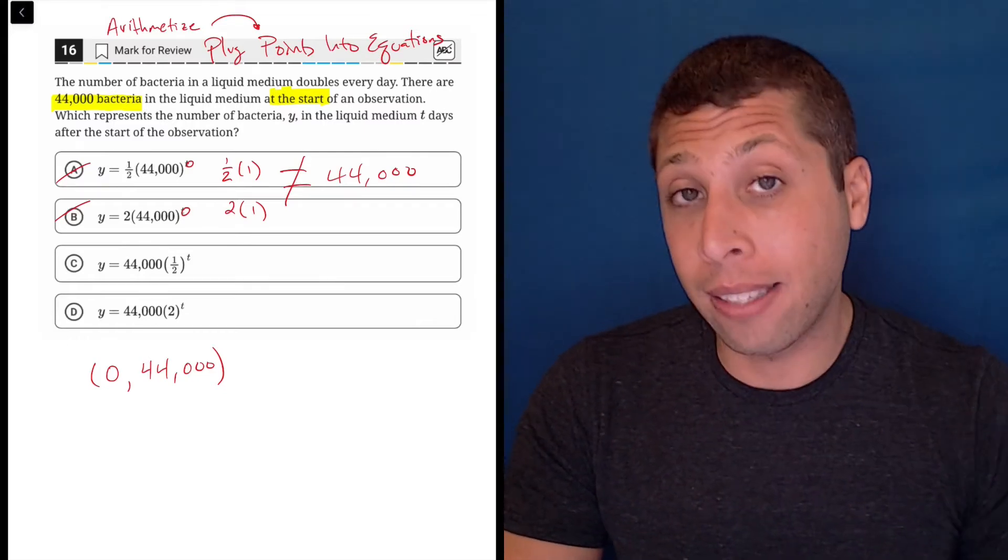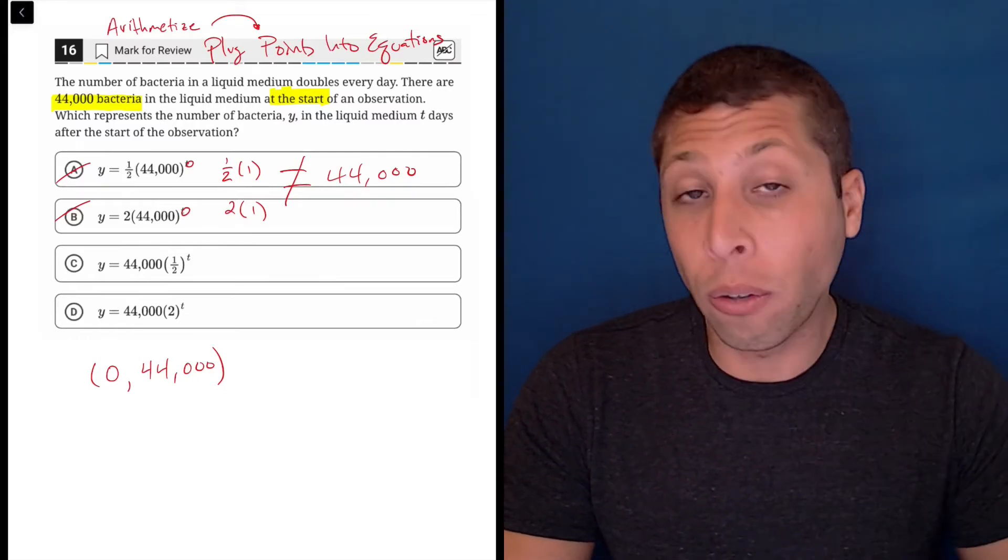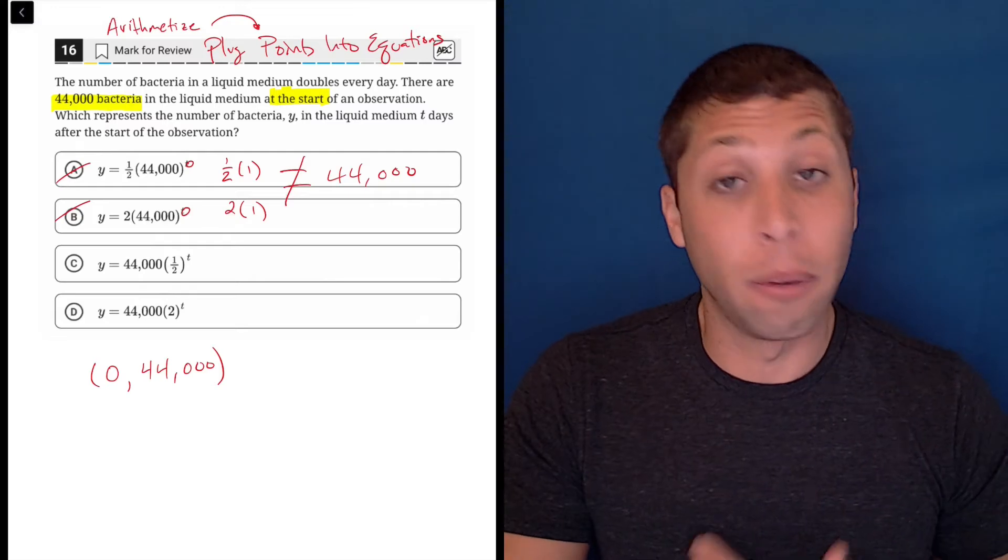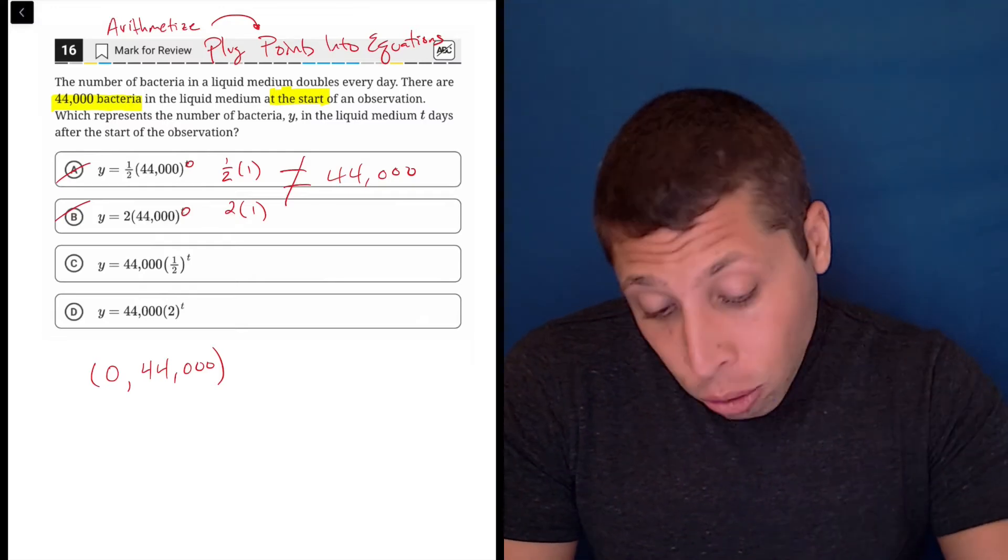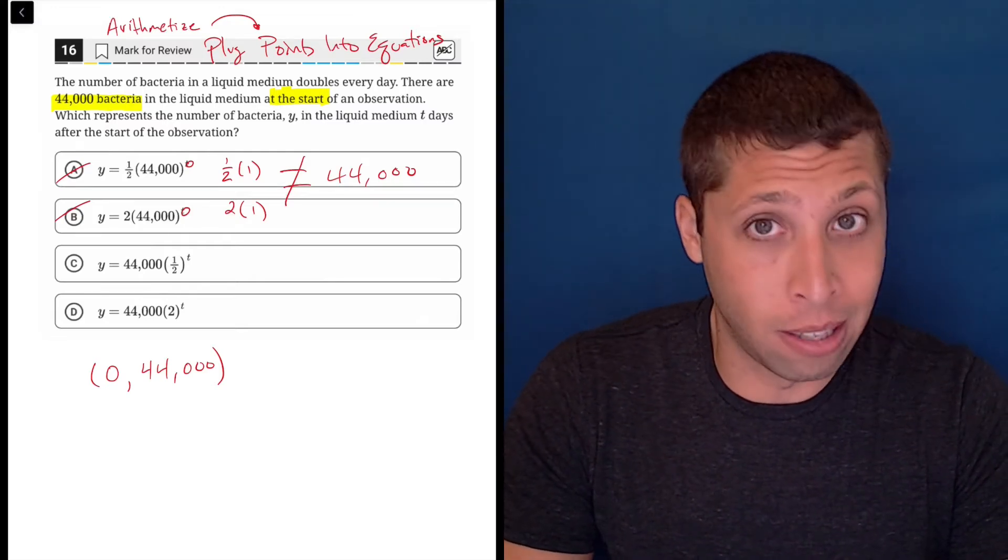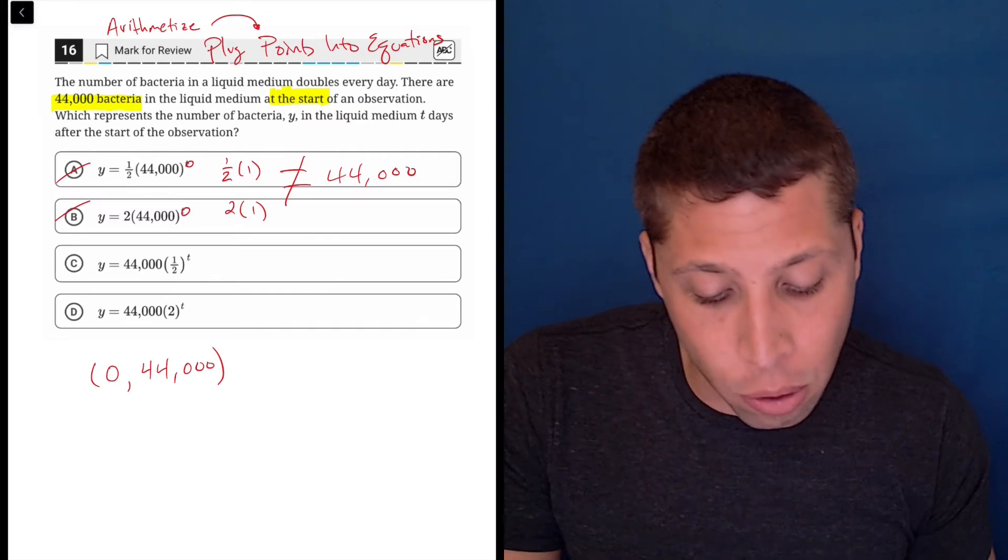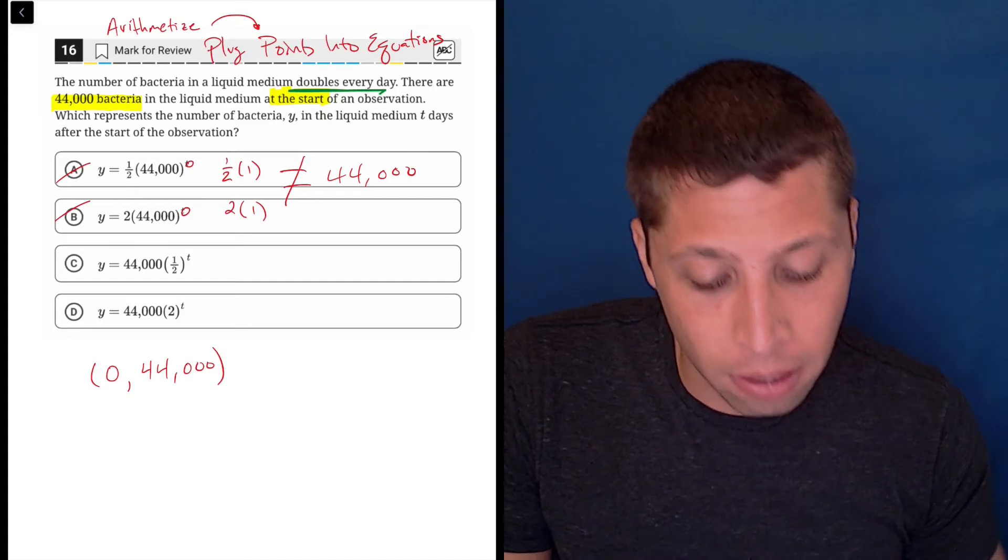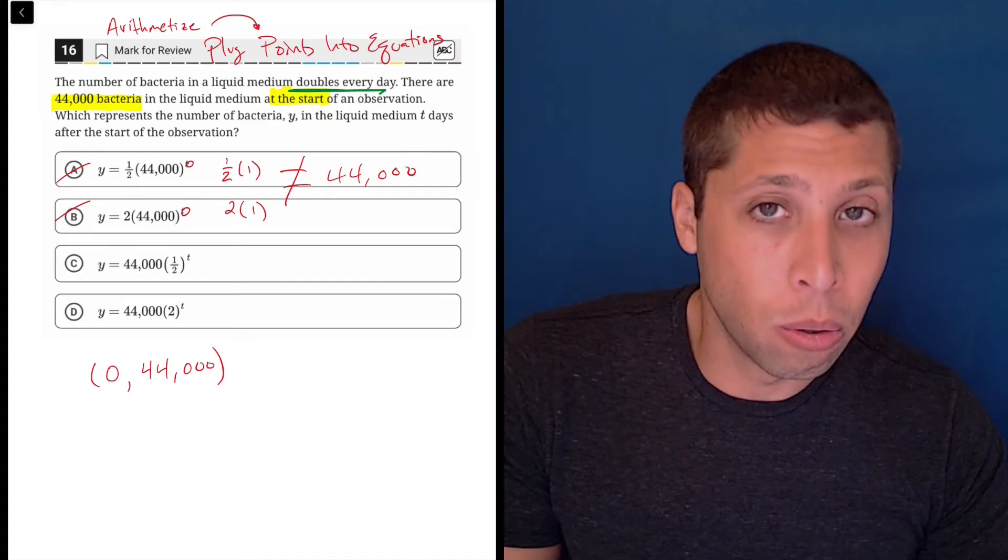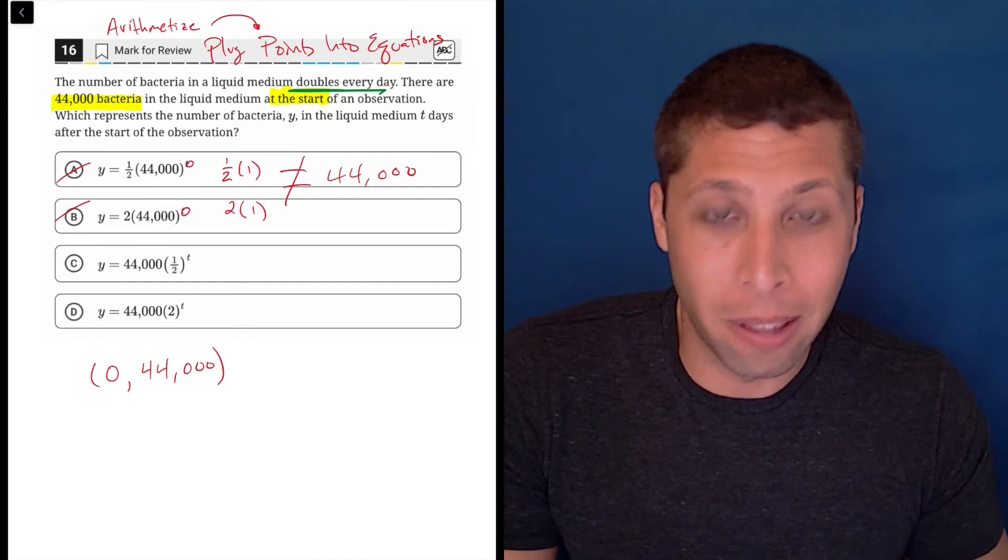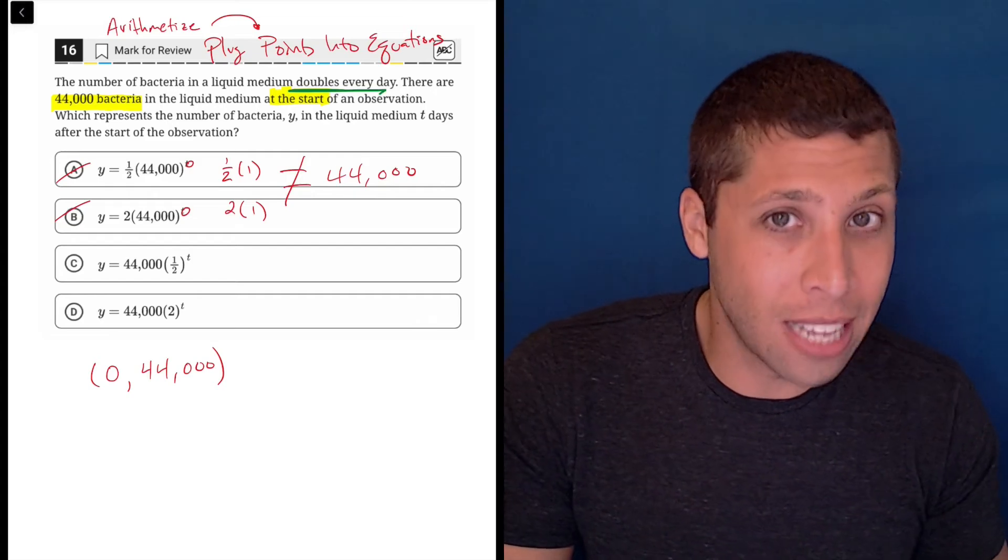Now if I did the same thing in C and D, this point, (0, 44,000), would work. It would work in both. So I could do two things. I can now just think about the only difference between those choices. Do I need a one half or do I need a two? And maybe many of you just think, well doubling means you're multiplying by two. So yeah, it's probably the two. So choice D and that is the answer.